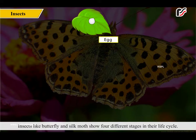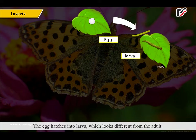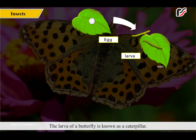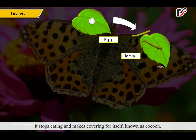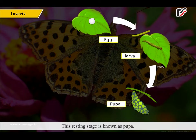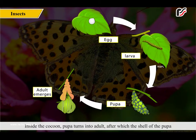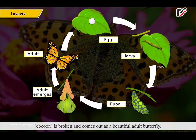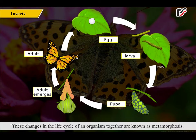Insects like butterfly and silk moth show four different stages in their life cycle. The egg hatches into larvae which looks different from the adult. The larvae of a butterfly is known as a caterpillar. The larvae eats leaves rapidly and grows fast. After some time, it stops eating and makes a covering for itself known as a cocoon. This resting stage is known as pupa. Inside the cocoon, the pupa turns into an adult, after which the cocoon is broken and a beautiful adult butterfly comes out. These changes in the life cycle of an organism together are known as metamorphosis.